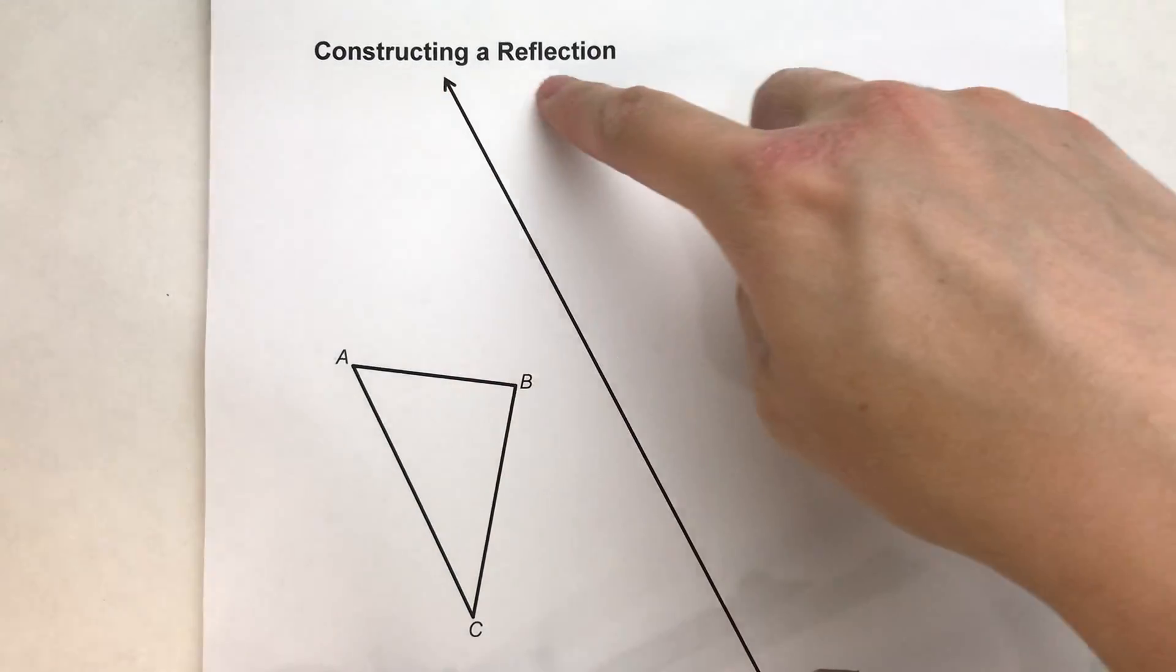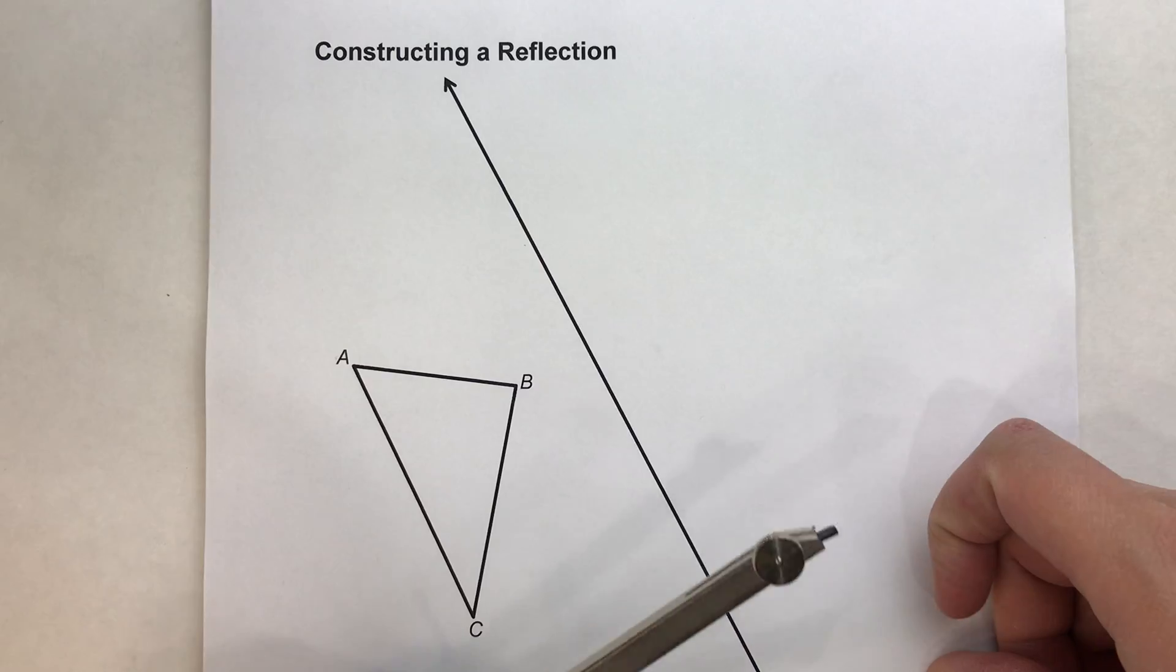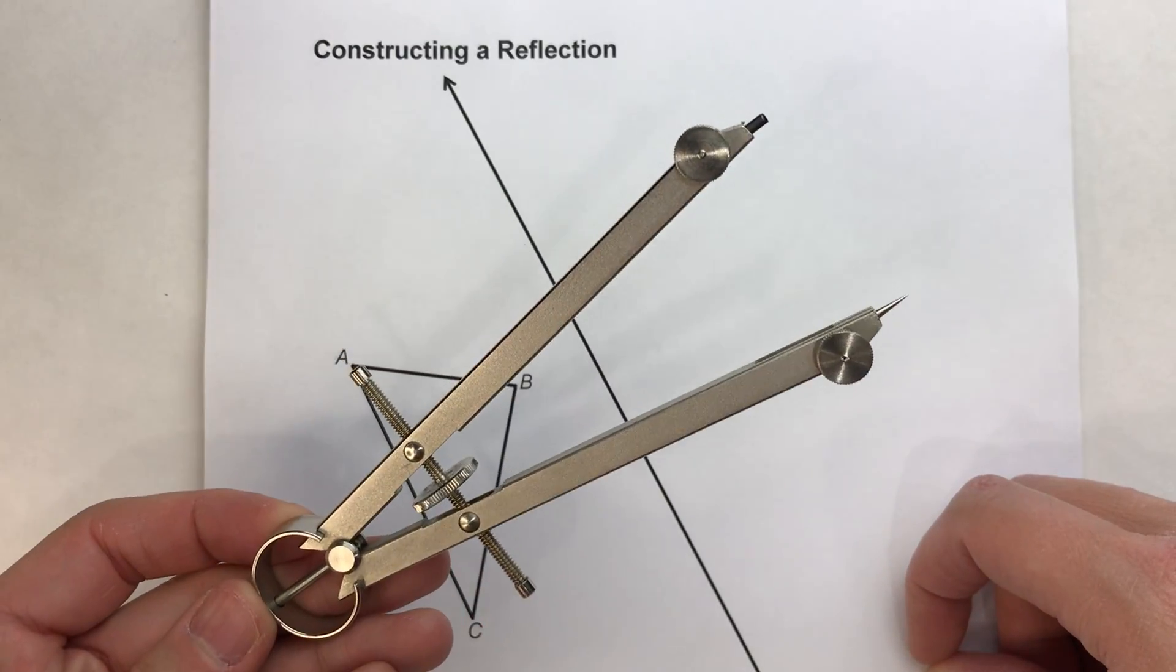So today we are constructing the reflection of a polygon across a line, and we're constructing it using a compass.